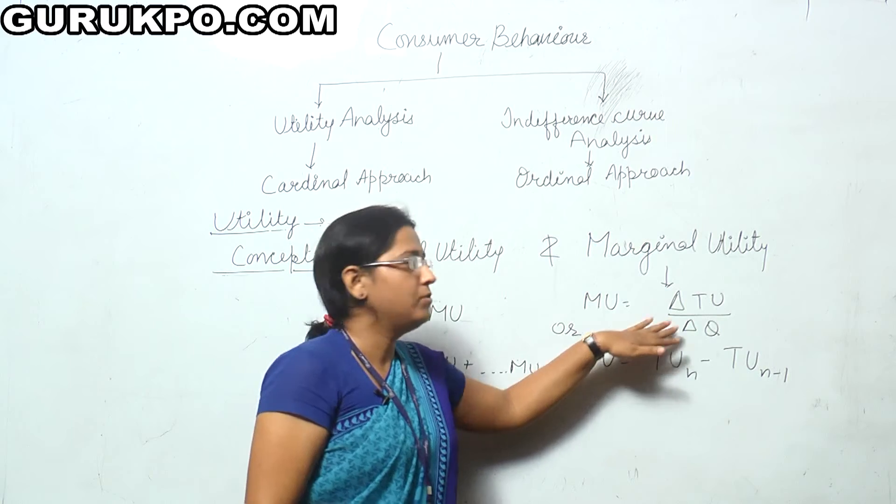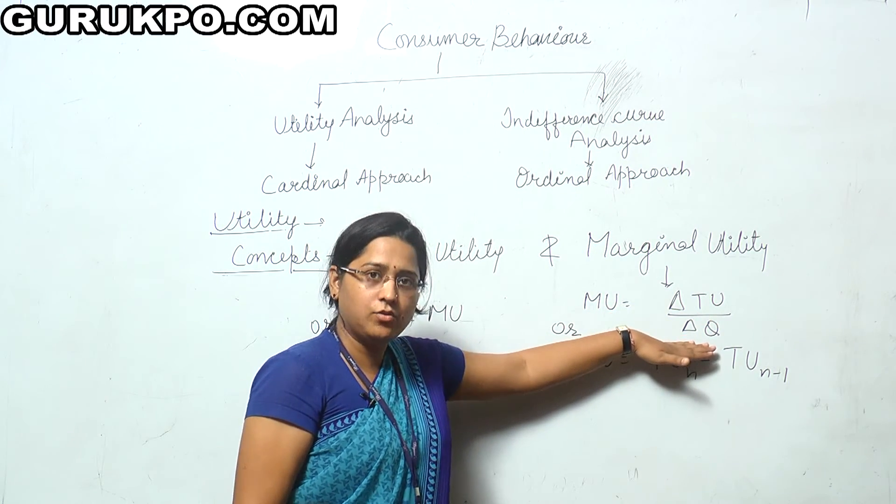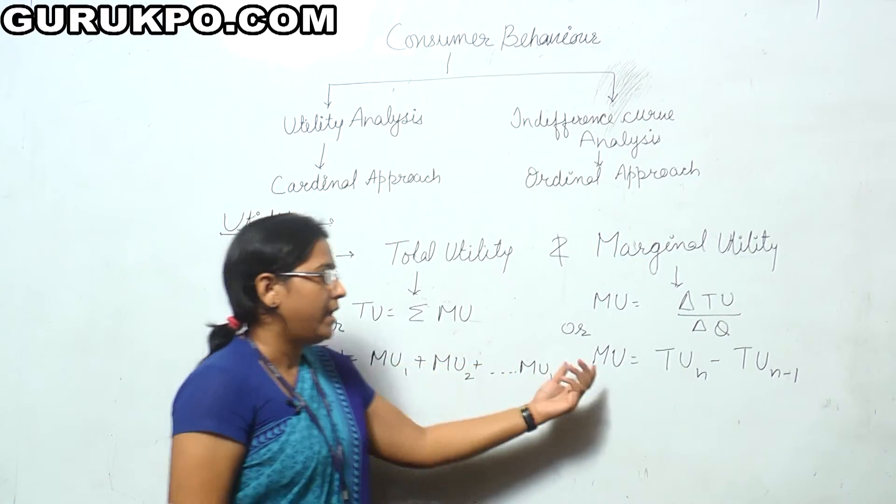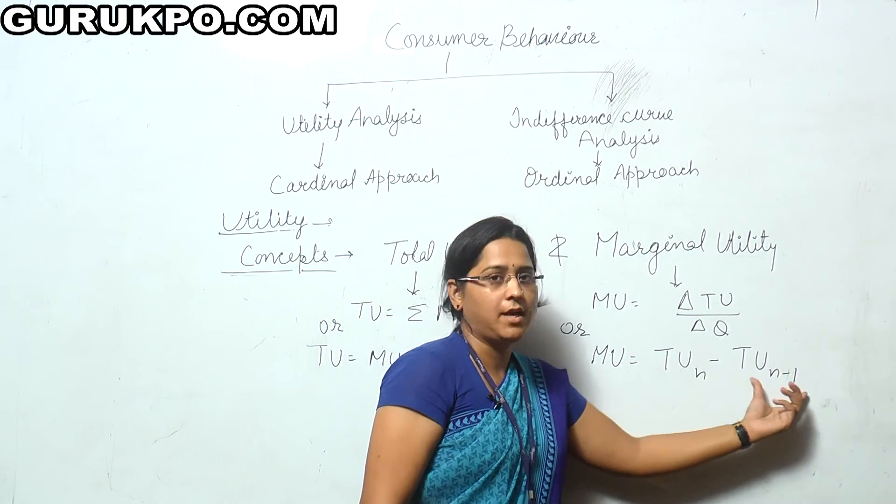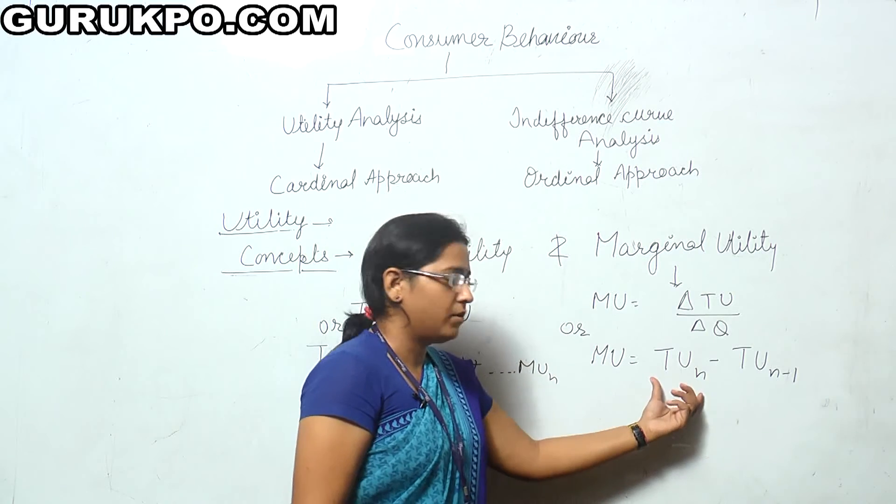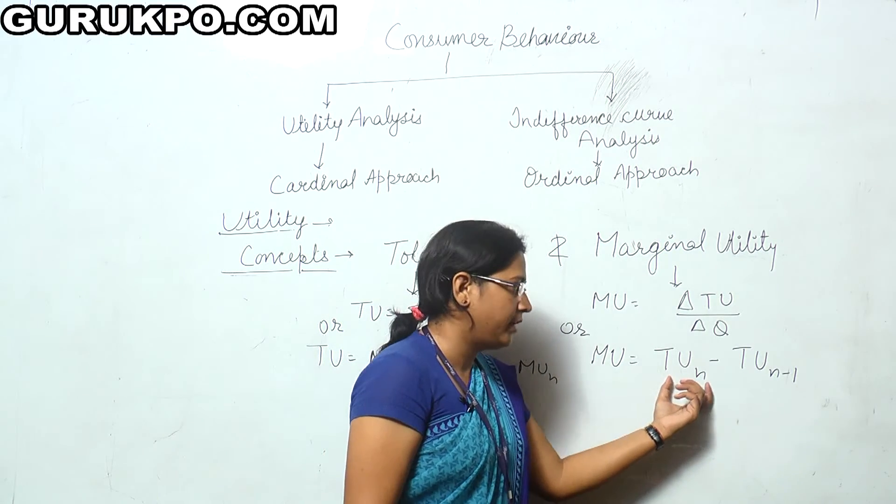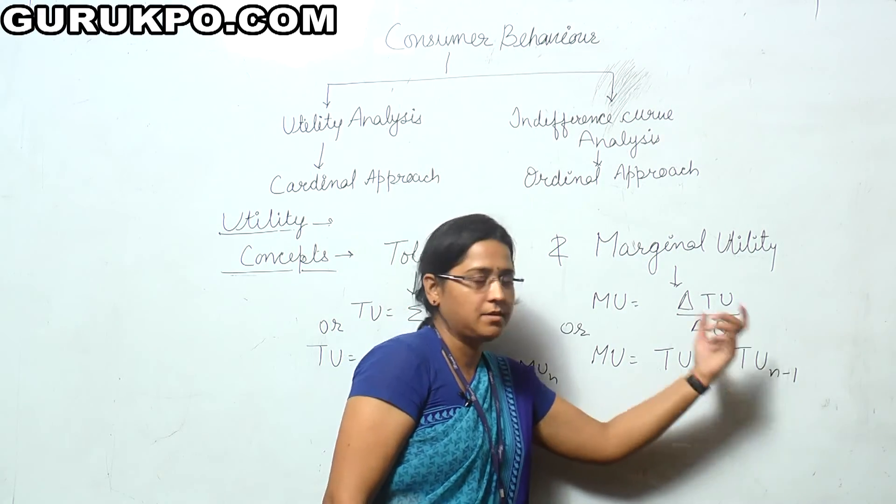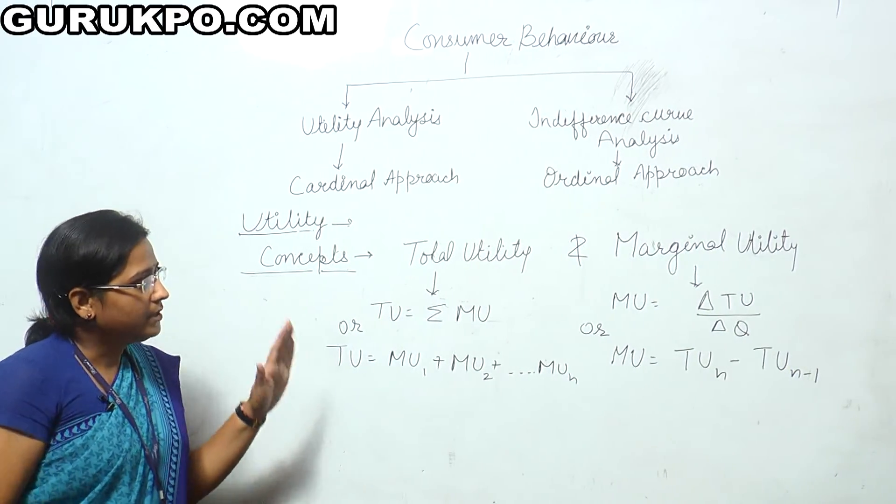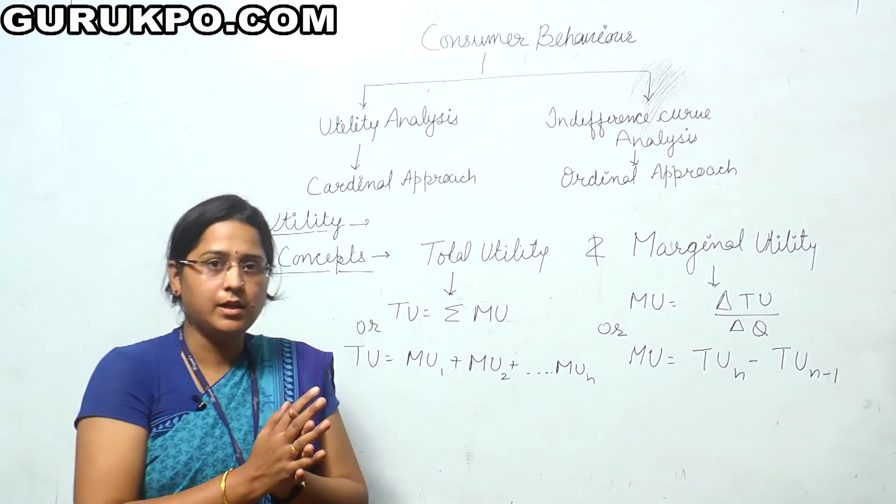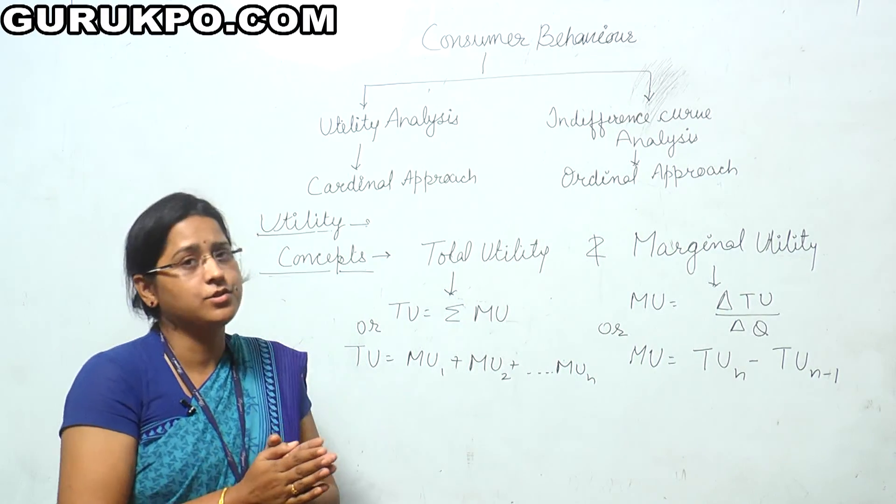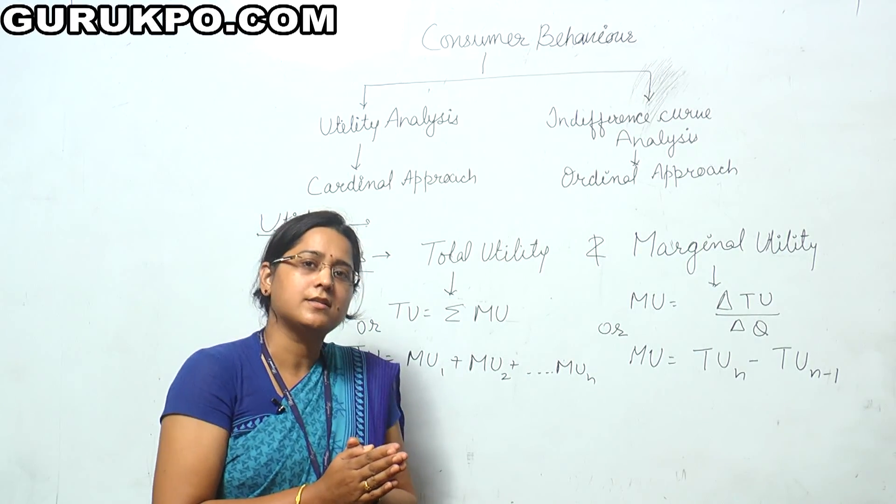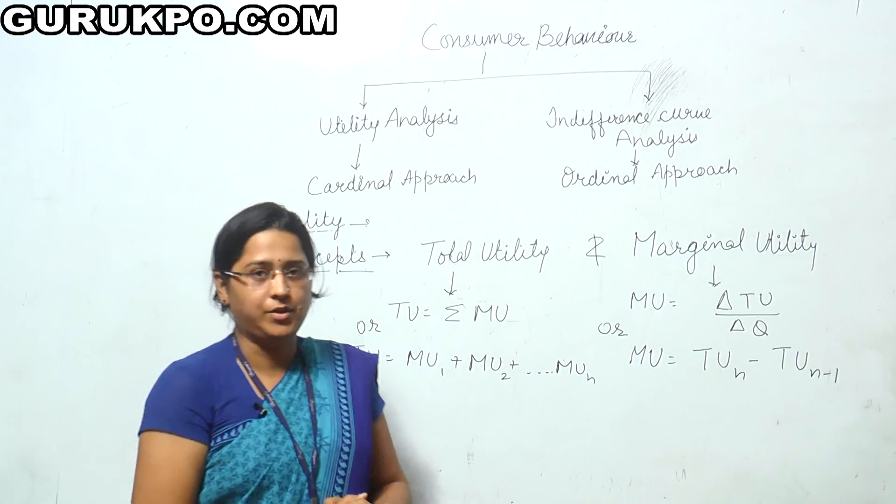In that way MU is equal to delta TU upon delta Q or we can explain it into this way that MU is equal to TU n minus TU n minus 1 means total utility of n commodity minus that extra utility that extra commodity consumption its utility. In this way this is the concept of utility. Now, there is certain relationship between total utility and marginal utility that we can discuss in another lecture. Thank you.